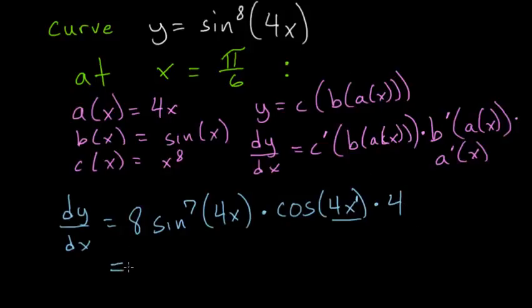And we can simplify a little bit. The 8 and the 4 multiply together, make 32. We have the sine of 4x raised to the 7th power, multiplied by the cosine of 4x. And we need to evaluate this derivative,